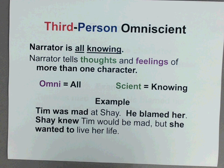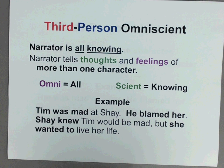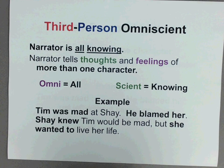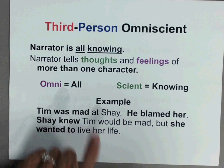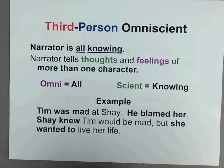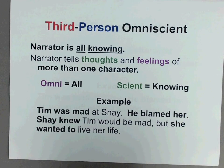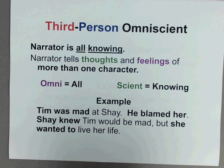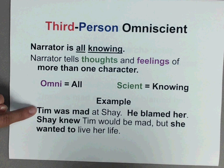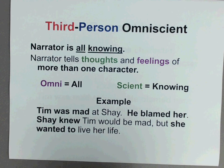One of the three third-person points of view is third person omniscient. The narrator is all-knowing — that means the narrator tells thoughts and feelings of more than one character. If we break down the word omniscient: omni equals all, and scient equals knowing, so that's where we get the definition all-knowing. For example: "Tim was mad at Shay. He blamed her. Shay knew Tim would be mad, but she wanted to live her life." So we have Tim's thoughts and feelings, and we have Shay's thoughts and feelings told by the narrator.